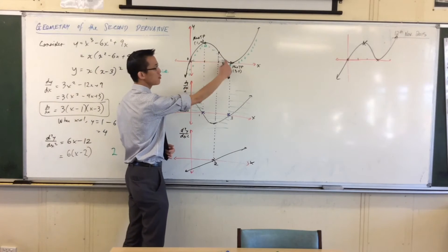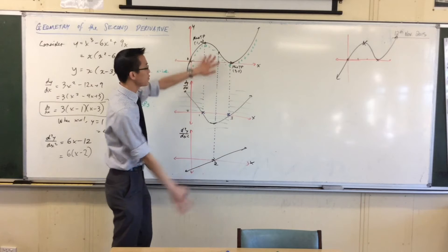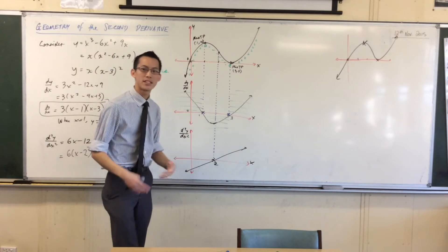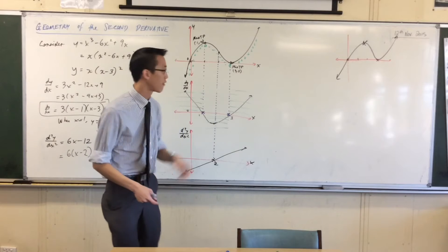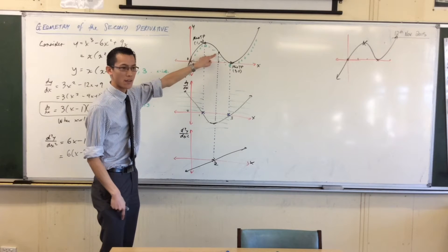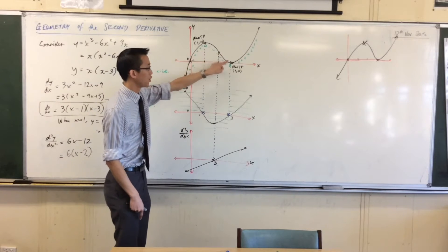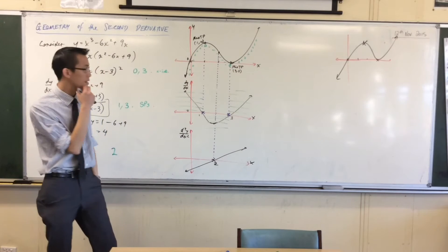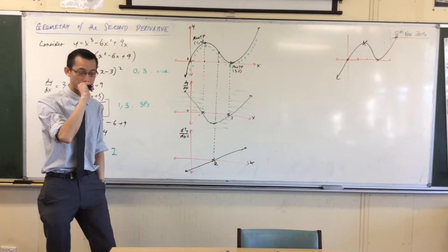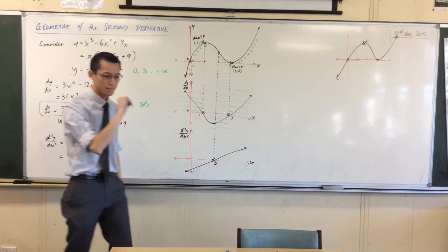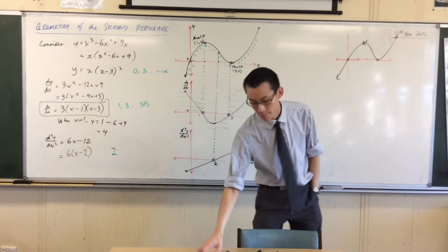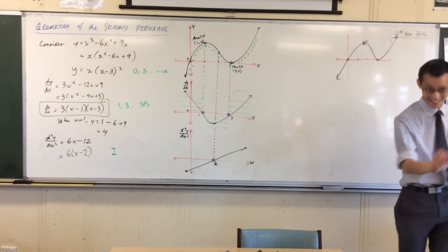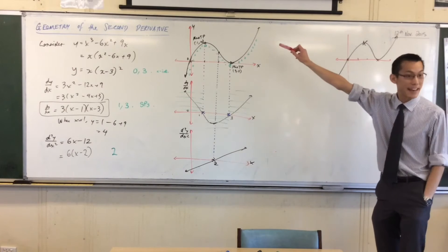From here to here, even though the gradient is still negative — so it's still decreasing — but it's a different kind of decreasing. From here to here I'm speeding up; from here to here I'm slowing down. Does that make sense? So like the point where it actually is — that coordinate — what would happen there? We'll find out that coordinate in a second.